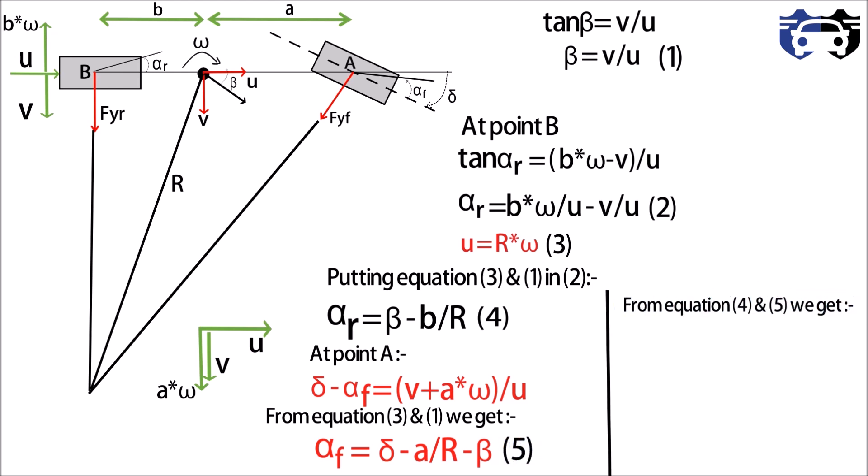Now from equation four and five we get delta equals to alpha_f minus alpha_r plus L by R. So this is the relation between the slip angle and the steering angle delta, where L equals to a plus b.